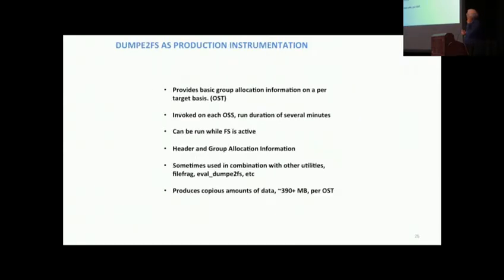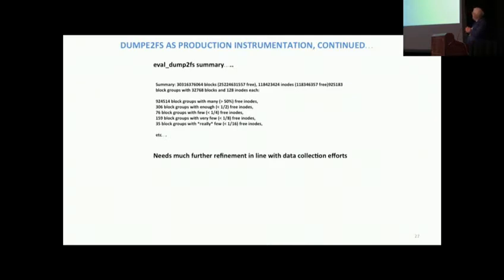Dumpe2FS. You're probably well aware, Linux has this wonderful utility. You can run it on a live file system called Dumpe2FS. You can run against your OSTs. Provides basic group allocation, can be invoked on each OSS, can be run while the file system is active. Header and group allocation information just dumped right out in a file for you. And sometimes you see this used in conjunction with other utilities like FileFrag. But it produces copious amounts of data. And by copious, I mean 390 megabytes per OST. So again, you've got 500 OSTs. Good luck.